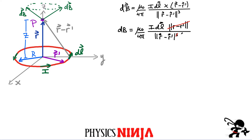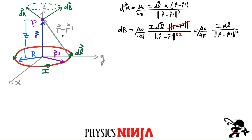We can clean this up. The last expression is mu naught over four pi, the magnitude of i dl, divided by the magnitude of r minus r prime squared. That is essentially the length of this vector that goes from the edge all the way to the point of observation. The nice thing is that any little element of current I consider is always going to be the same distance away from the point of observation. So this term is actually going to be a constant for this problem. Let's go ahead and work on this: what is the magnitude of r minus r prime?